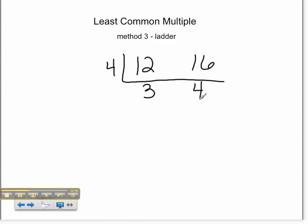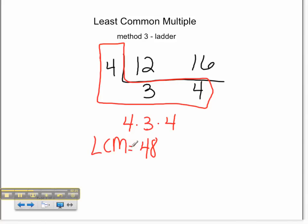No. So we're going to look and instead of just taking our factors, we're going to think about this as an L shape. And we're going to multiply everything inside our L. So 4 times 3 times 4. 4 times 3 is 12. 12 times 4 is 48. Our least common multiple of 12 and 16 is 48.